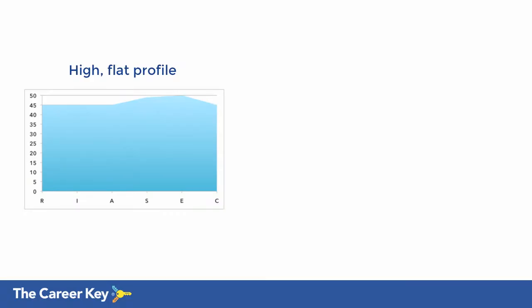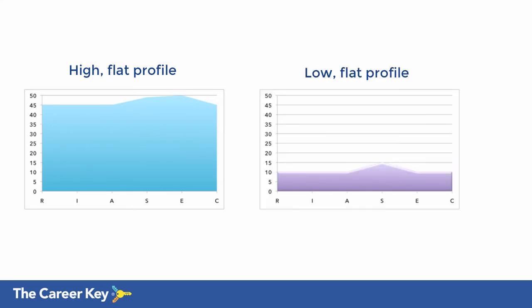A flat profile can look like this. As you can see, there is little difference between the highest and the lowest scores for the six personality types. It is called a high flat profile, and it is one of two kinds we will discuss in this video. The second kind is called a low flat profile. Whether high or low, a flat profile can be a challenge in understanding and using.